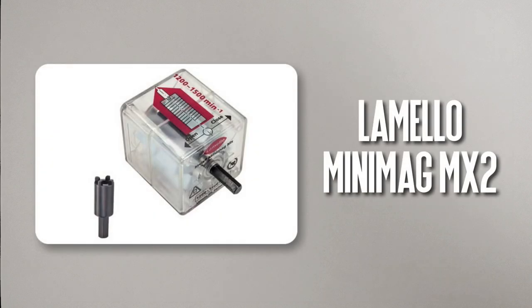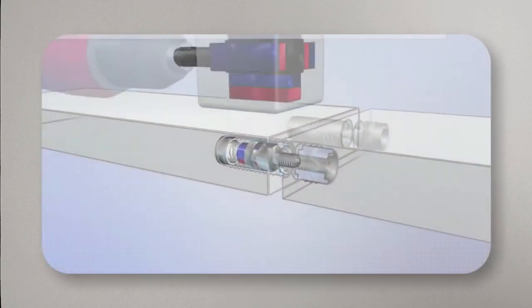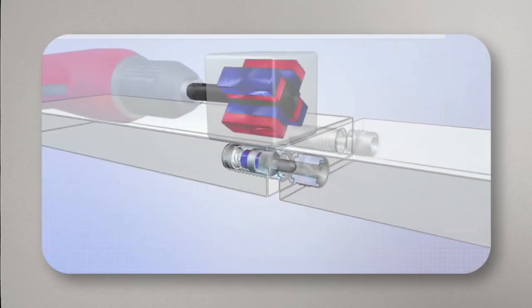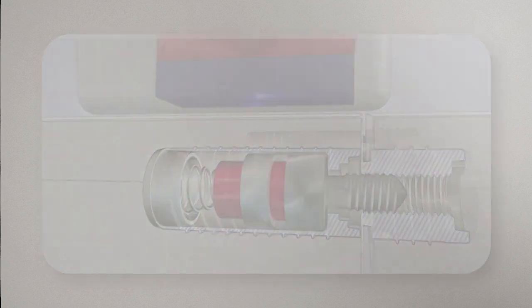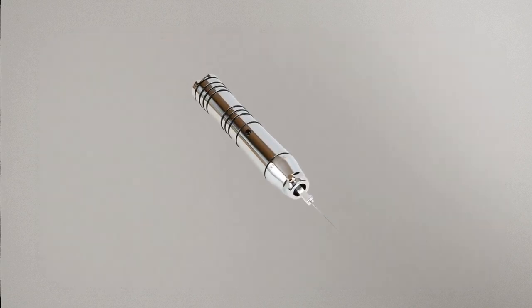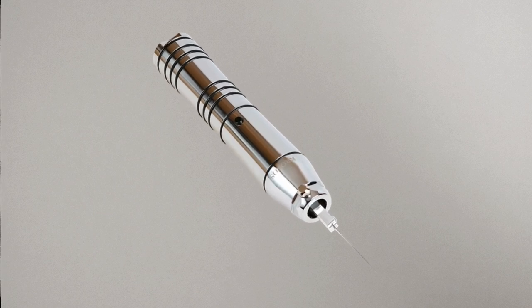The Lamello Minimag MX2 consists of a series of magnets which spin within a fixed perspex box, and when held against the lock body it produces a magnetic storm of sorts. You can think of it as the equivalent of using an electric pick on a pin tumbler lock.